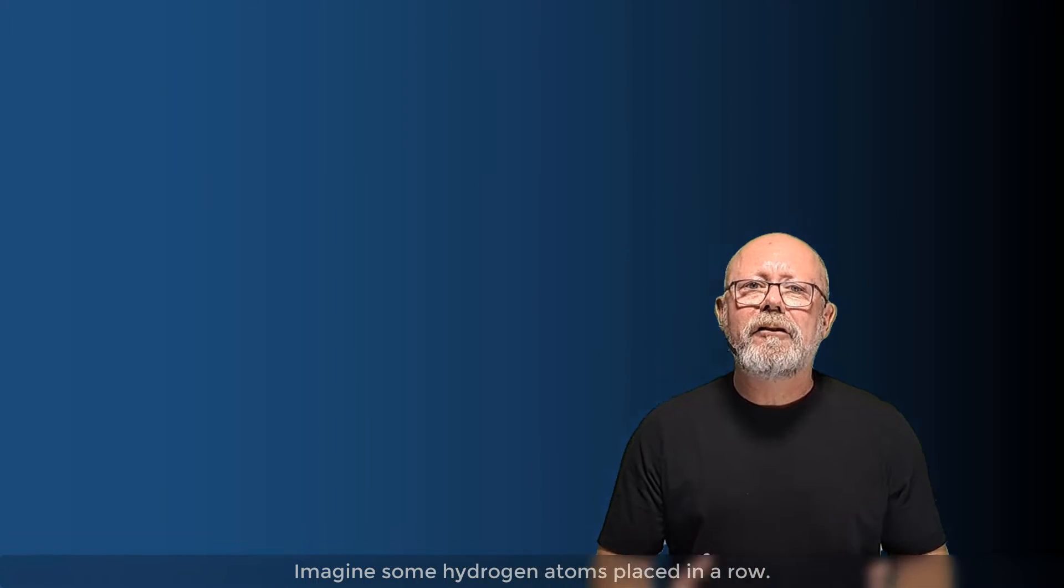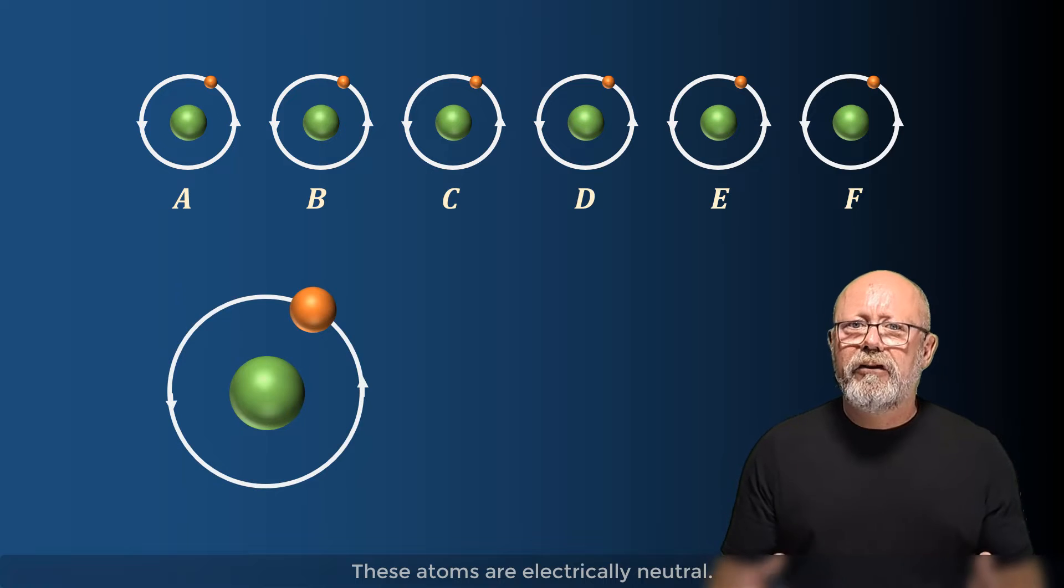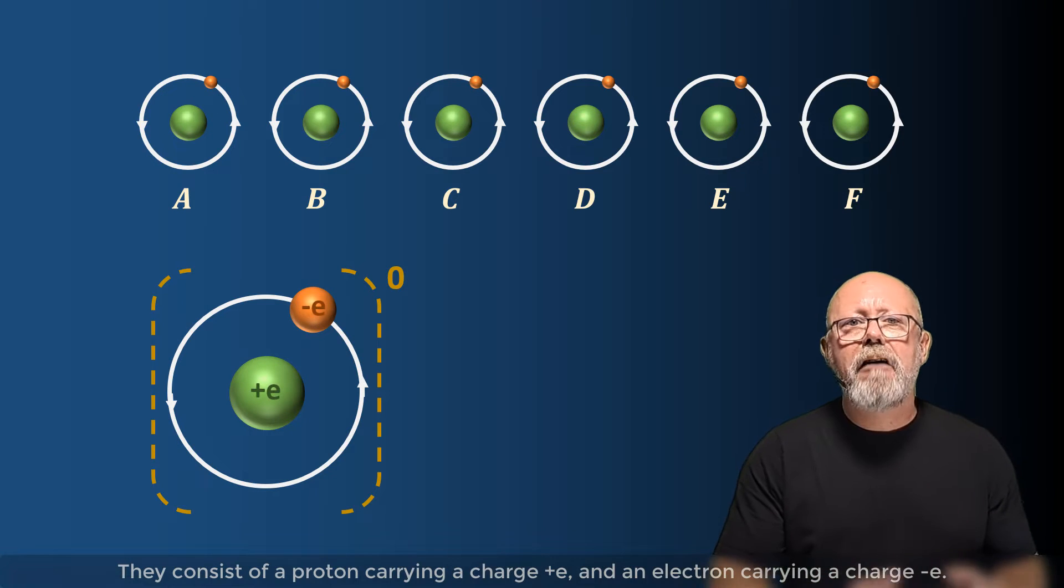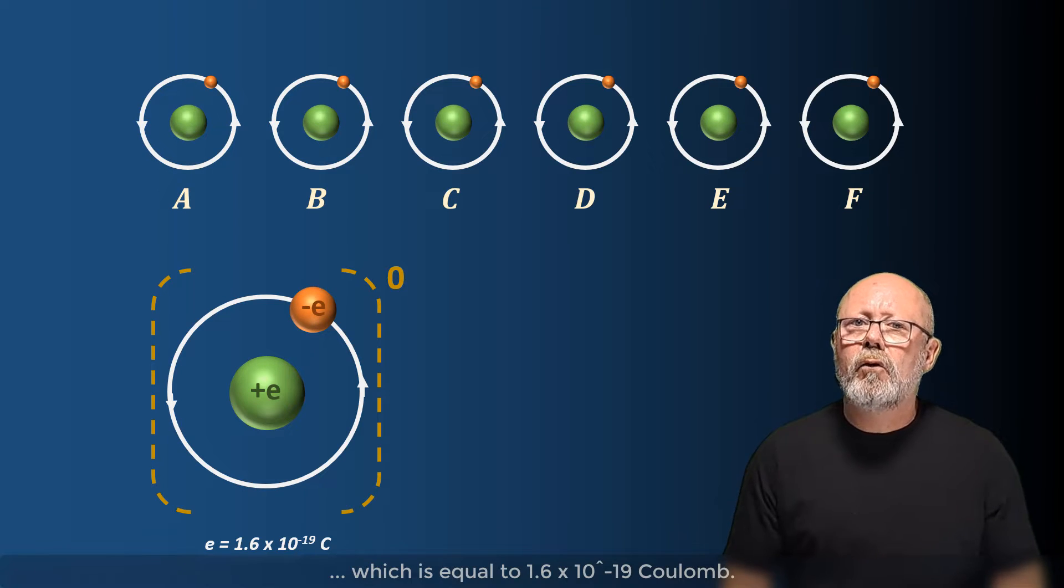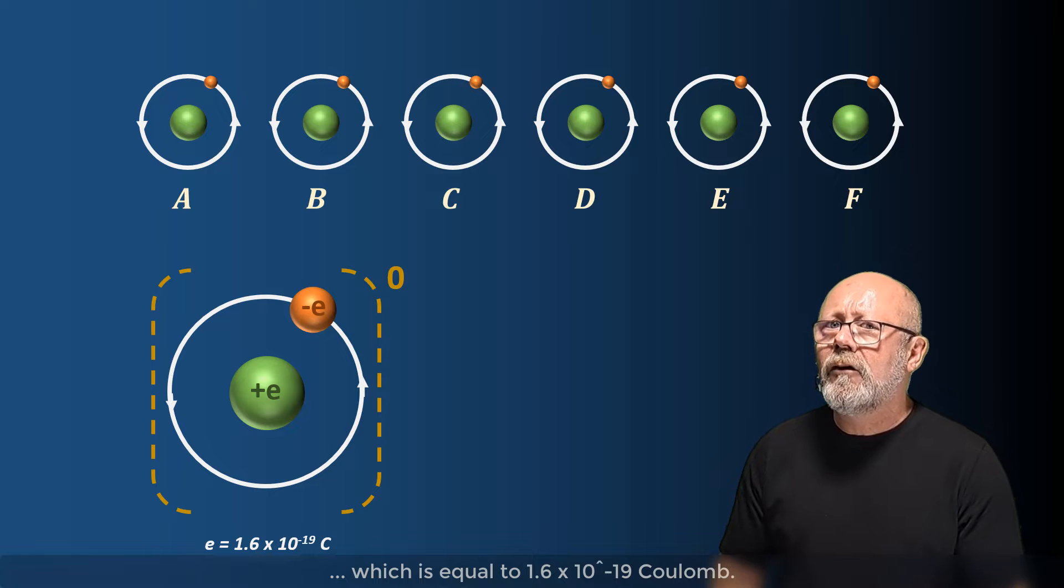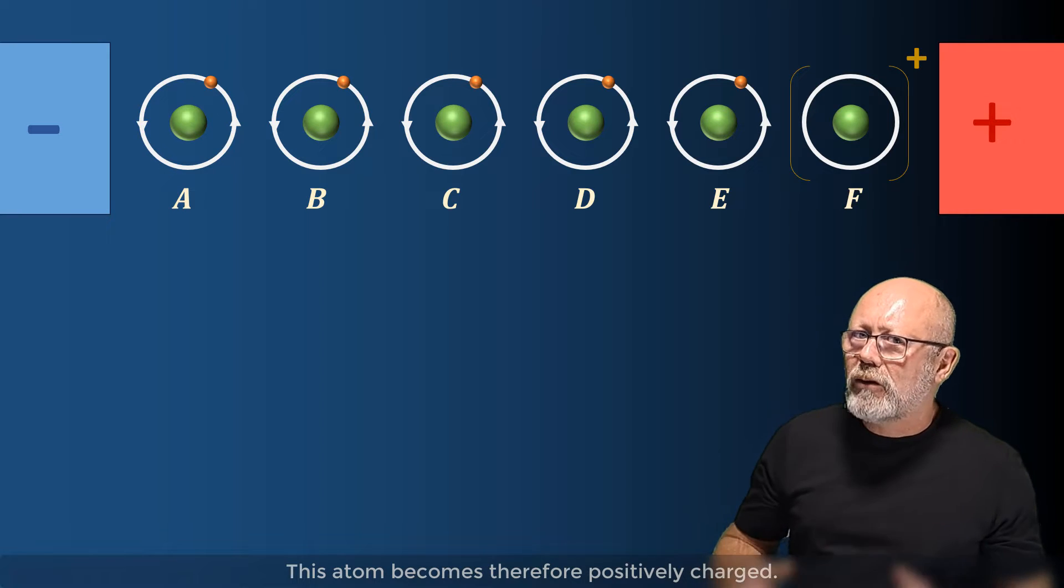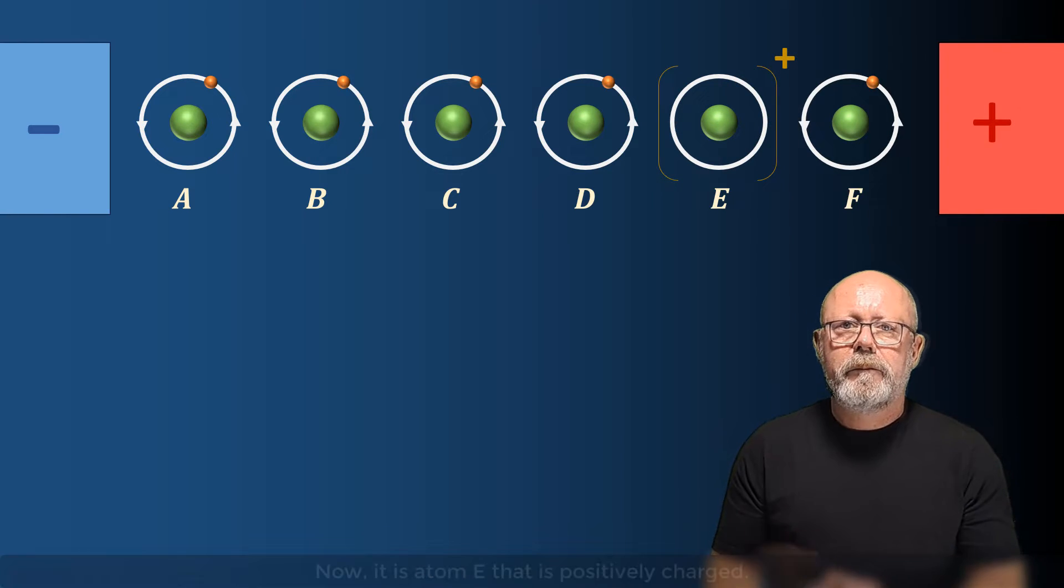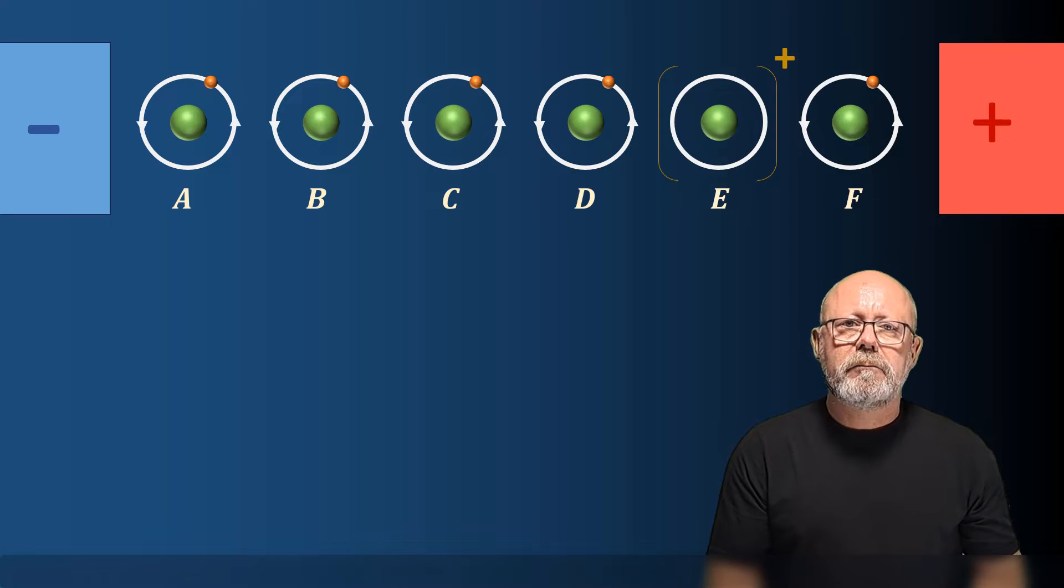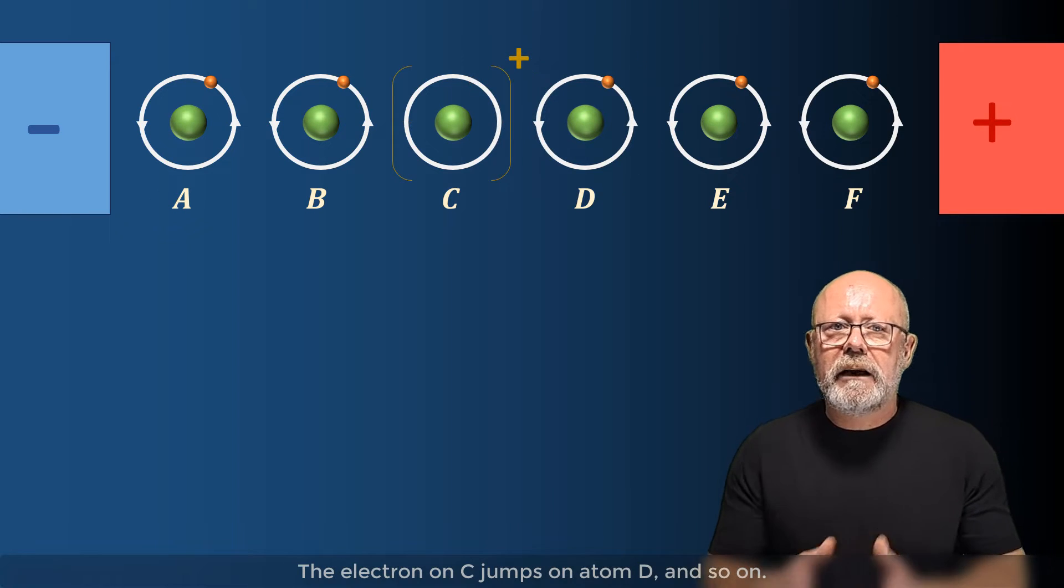Imagine some hydrogen atoms placed in a row. On the diagram, let's label them A, B, C, D, E, and F. These atoms are electrically neutral. They consist of a proton carrying a charge plus E and an electron carrying a charge minus E. As you probably know, the letter E represents the elementary charge which is equal to 1.6 by 10 to the minus 19 Coulomb. Now, let's remove an electron from atom F on the far right. This atom becomes therefore positively charged. The electron on atom E will be attracted by atom F and therefore jump to it. Now, it's atom E that is positively charged. Let's repeat the process. The electron on D jumps on atom E, the electron on C jumps on atom D, and so on.